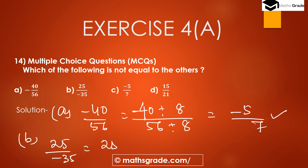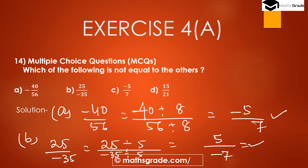For option B, we divide numerator and denominator by their HCF of 5. So -35 ÷ 5 = -7 and 25 ÷ 5 = 5, giving 5/(-7) which is -5/7. This is also -5/7 in simplest form.